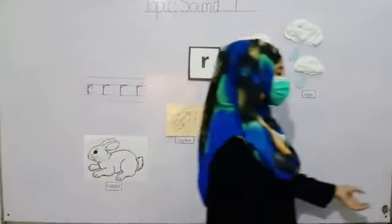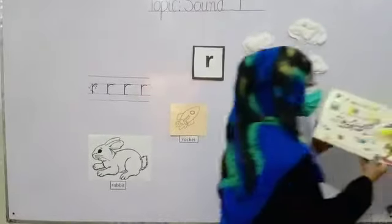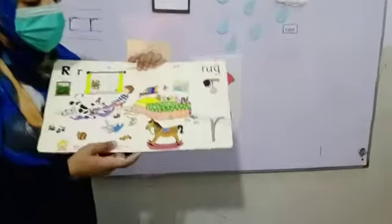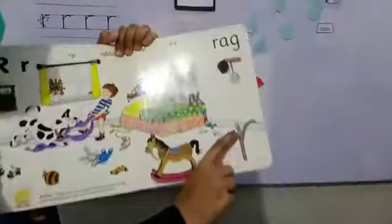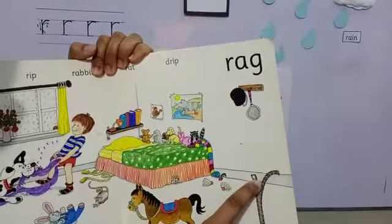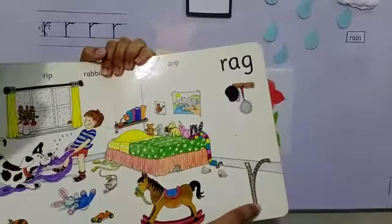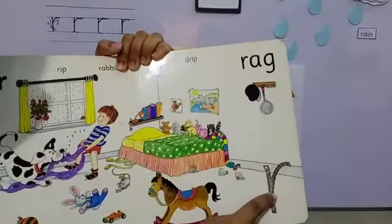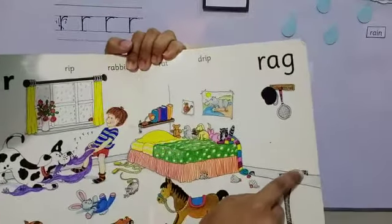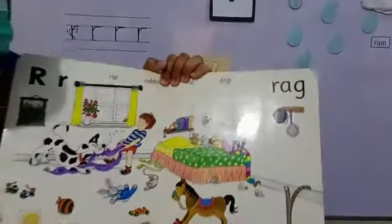Let's do finger tracing. Look here. Start from the point. Go down, down, down. Go up, go round. Which sound is this? It's R.